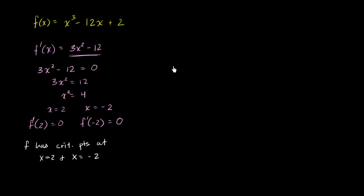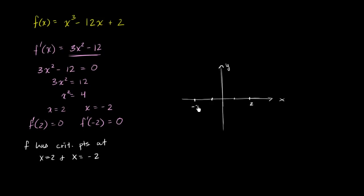Let's draw an axis down here, because we can use that information later to graph f of x. So this is my x-axis, this is my y-axis. We have critical points at x equals positive 2 and x equals negative 2. For the derivative, when x equals 0 we're at negative 12. So graphing y equals f prime of x, it looks like a upward-opening parabola crossing the x-axis at x equals negative 2 and x equals positive 2.